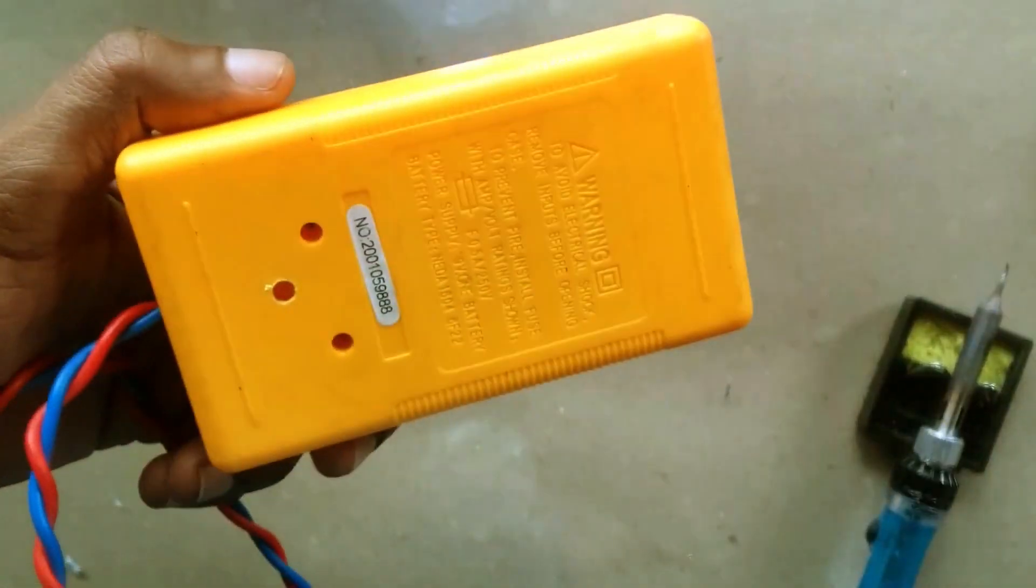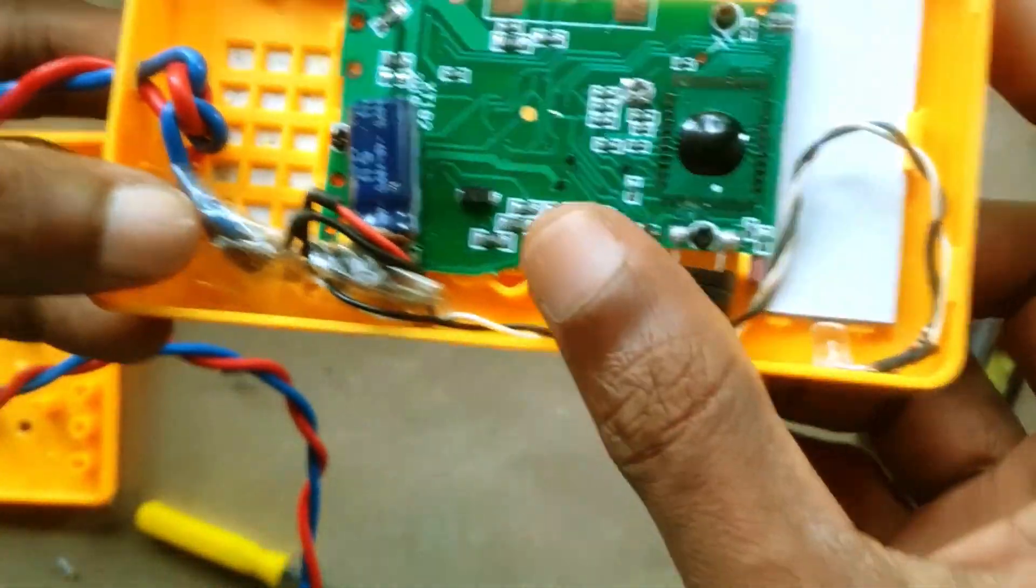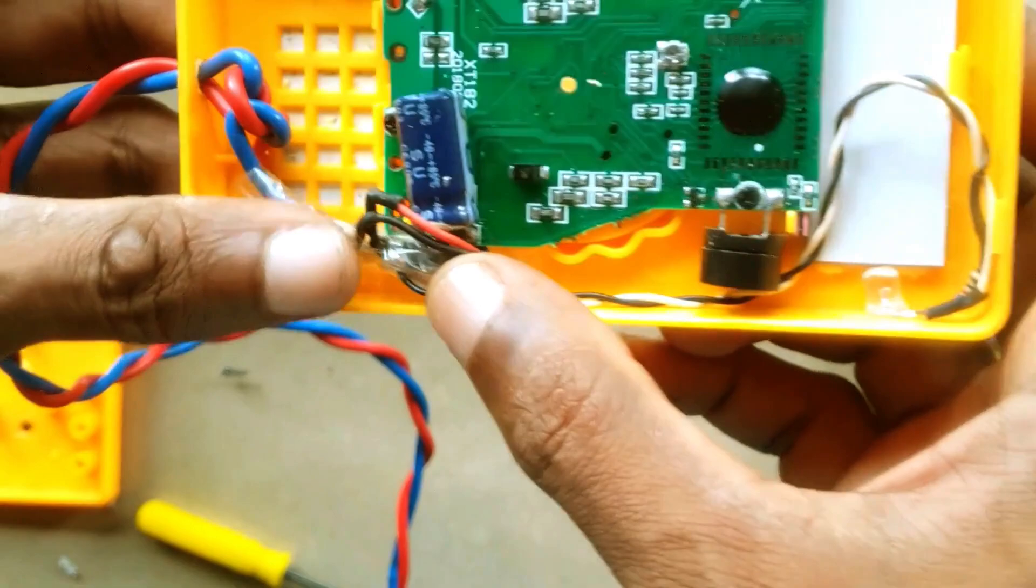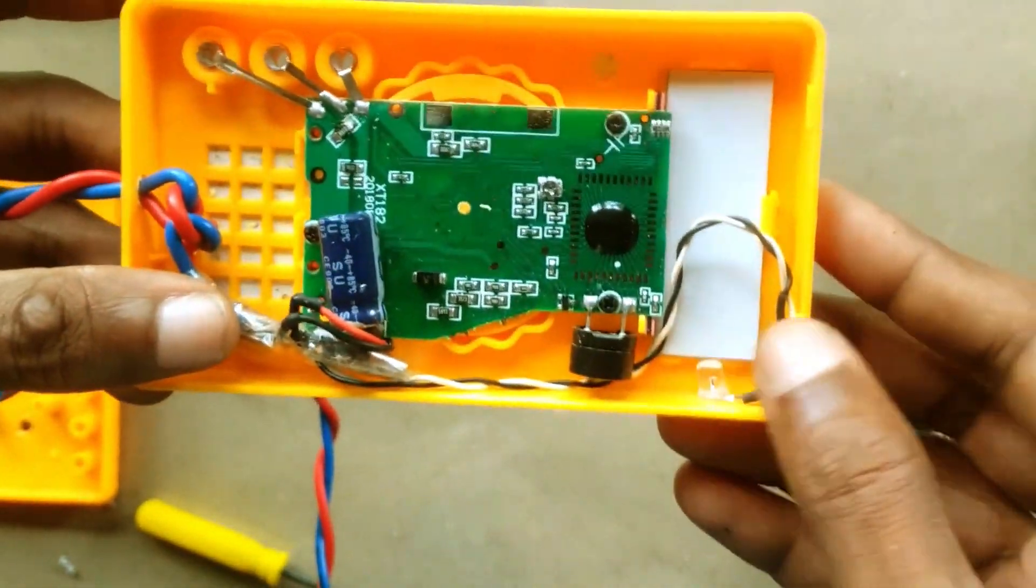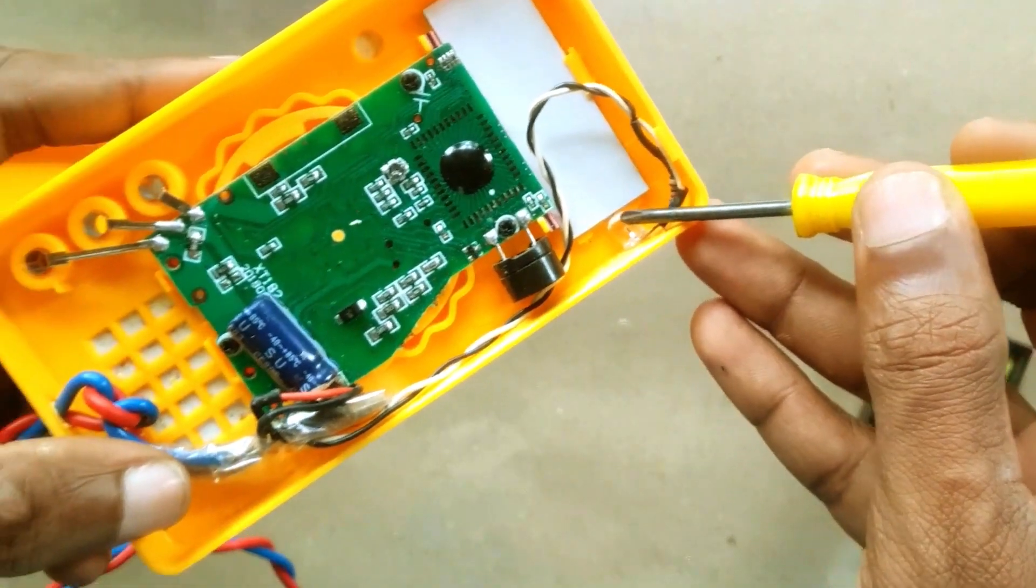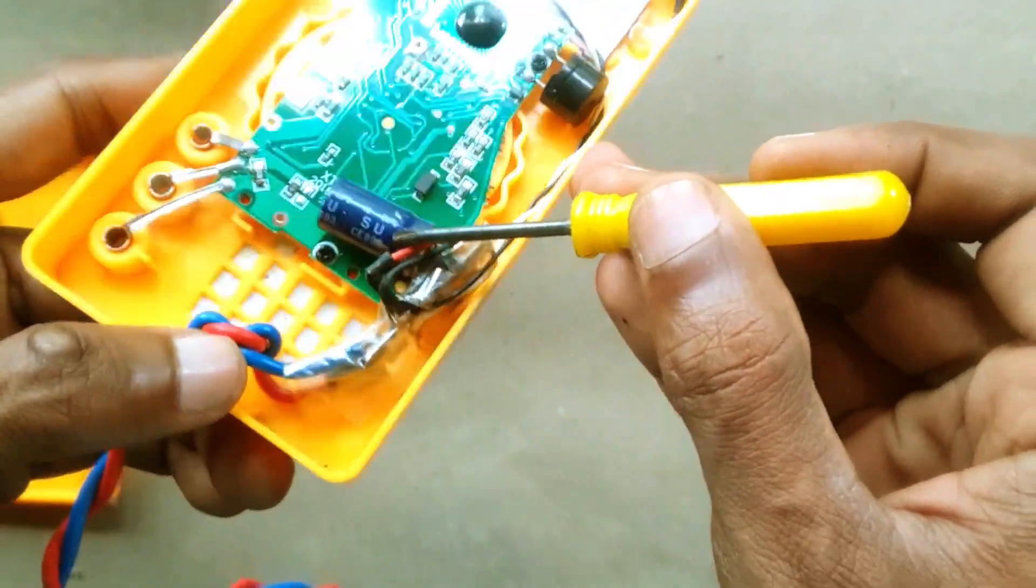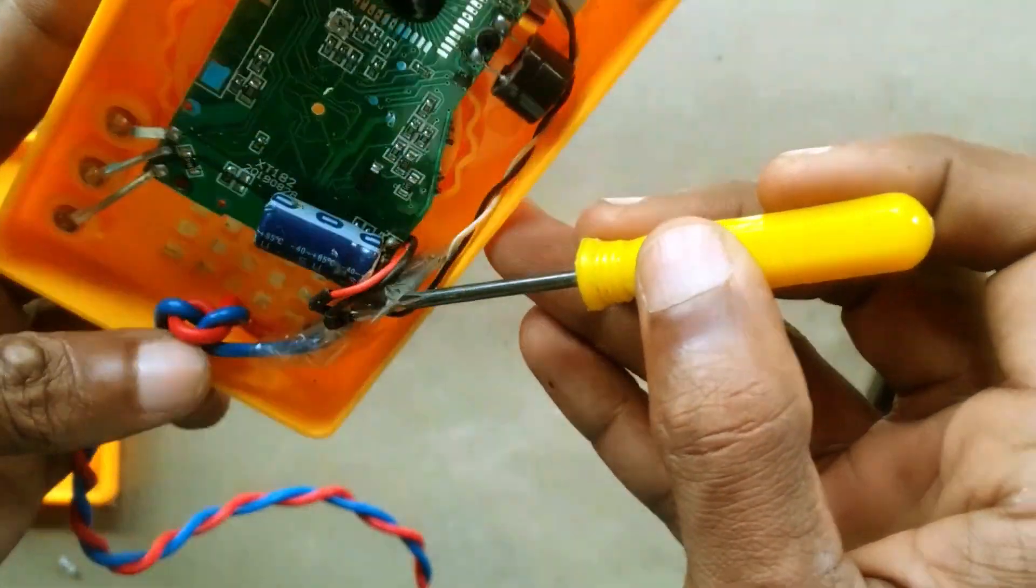This multimeter is modified to work on external DC supply instead of batteries. This way I will not need to replace batteries time to time. Please check my channel to find how to convert the multimeter to work on external 12V supply.